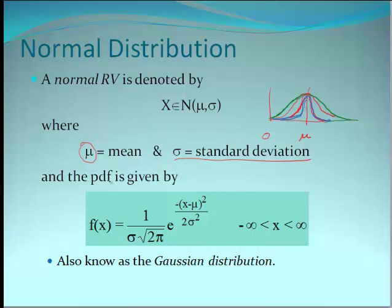The probability density function is given by this really horrible-looking term, which actually isn't that bad. If you look at what's going on up here, it's like saying: take wherever you're at on this curve, take the difference between that point and the mean, square it, and divide it by standard deviation squared.